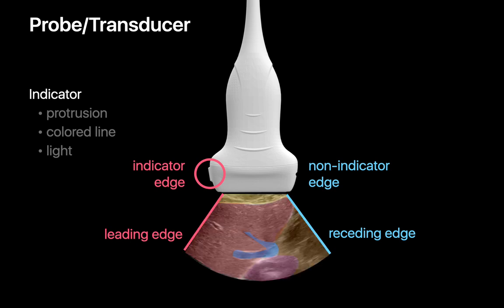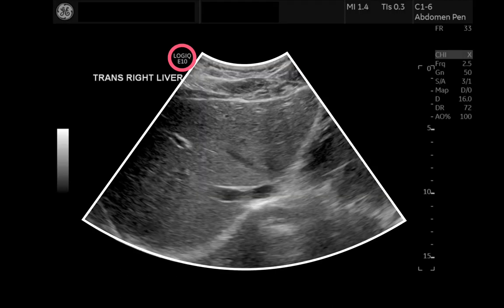When we image anatomy with an ultrasound probe, by convention, vendors almost always display the ultrasound image with an indicator mark on the upper left edge of the image field on screen.